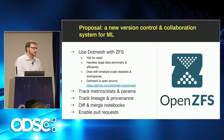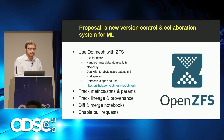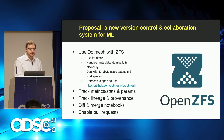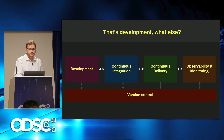It's also possible to use a project from Jupyter called nbdime — for notebook diff and merge — to, as the name suggests, diff and merge notebooks. You can build a system on top of nbdime that allows pull request style workflows. That's the development side.